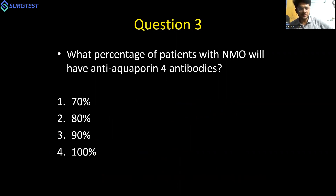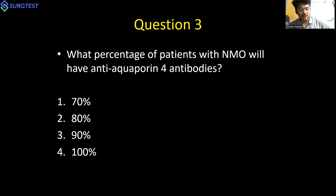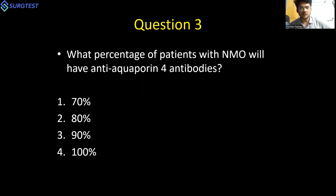Question three: what percentage of patients with NMO will have anti-aquaporin-4 positivity? This question highlights a change from the earlier edition of Harrison's. Anti-aquaporin-4 is a very sensitive as well as specific antibody for NMOSD. It can be checked in both serum and CSF.